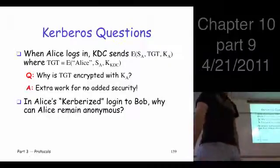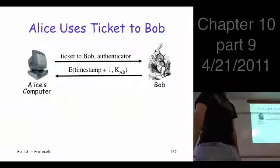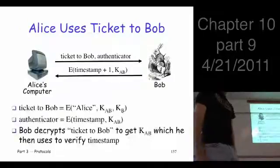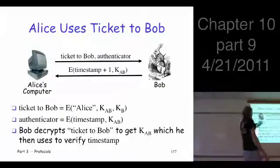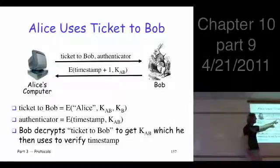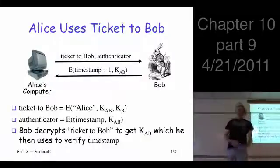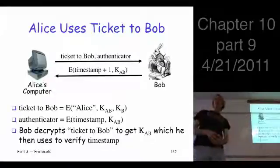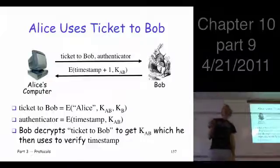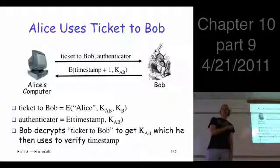Now, here's another question. So when we do this login to Bob, at this point here, when Alice wants to talk to Bob, Alice is anonymous. If Trudy's watching these messages, she doesn't know it's Alice or Bob. She just sees a ticket go past, which is encrypted. She sees an encrypted timestamp and another encrypted timestamp. So how is it that Alice can remain anonymous here? I thought when we used symmetric keys, it was really hard to be anonymous. So why does that work here?